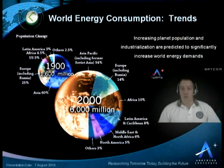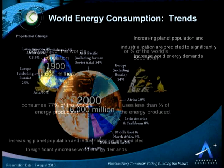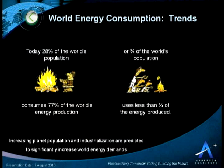Another key factor we have to consider when we look at world energy consumption is not just consumption per person, but of course how many people. This chart shows the increase we've seen in population just over a short period of a recent hundred years. In 1900, we saw about 1.6 billion people populating this planet, and today more than 6 billion. This number is growing quickly, and not only is the number growing very quickly, but about three-quarters of the world's population will begin consuming more as we move into the future, as they become more industrialized and technological in their local cultures and countries. What we're seeing is an increasing planet population combined with industrialization that will dramatically increase world energy demands.